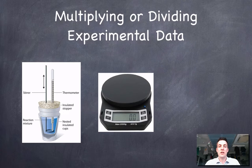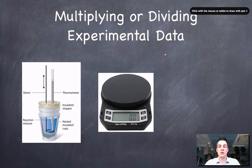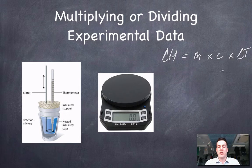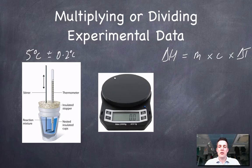Things get very different if we're multiplying or dividing. If you're finding the heat energy change — delta H — you might multiply the mass of a substance by its heat capacity by the change in temperature. We established the temperature change was 5 degrees centigrade plus or minus 0.2 degrees centigrade, and the mass of water was 10.0 grams plus or minus 0.1 gram.